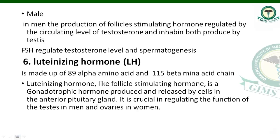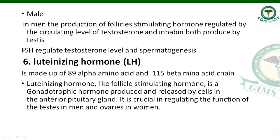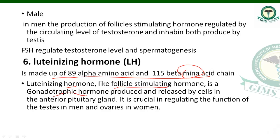What is basically luteinizing hormone? It is called luteinizing hormone because it is made up of 89 alpha amino acids and 115 beta amino acids. Luteinizing hormone, like follicle-stimulating hormone, is a gonadotrophic hormone.